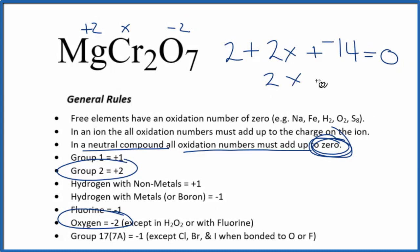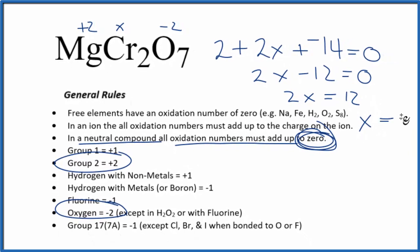So two X minus twelve equals zero. Two X equals twelve, and then X would equal a positive six.